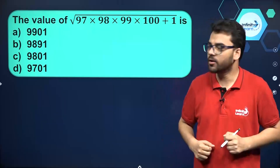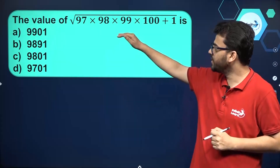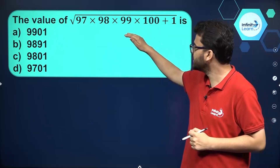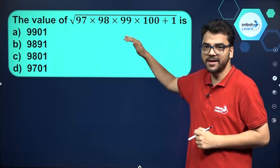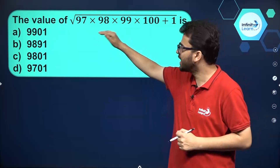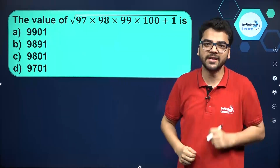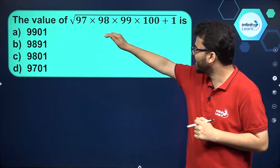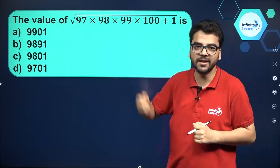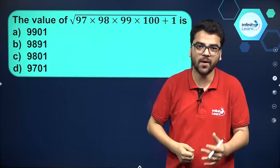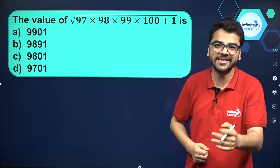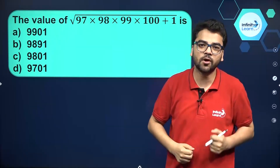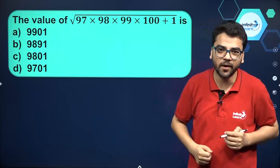So here we have a question in which 97 × 98 × 99 × 100 + 1 is given inside a square root and we have to find its value. To start multiplying these numbers and then find the square root is a very tedious task. So obviously there is a trick to solve these types of questions.